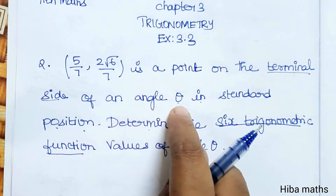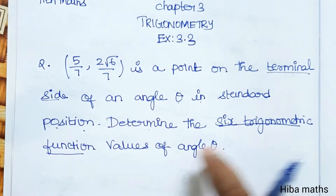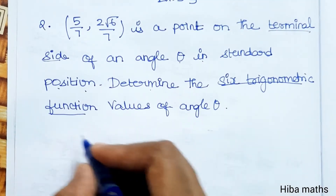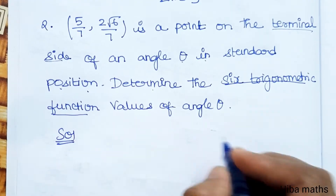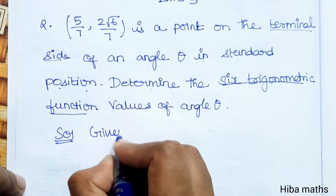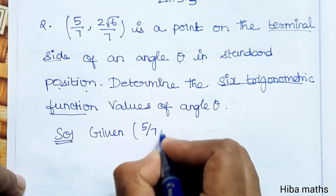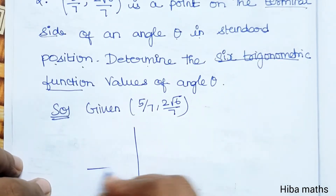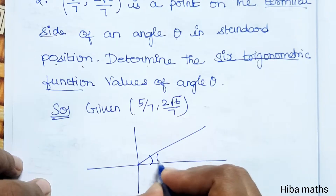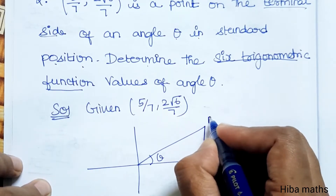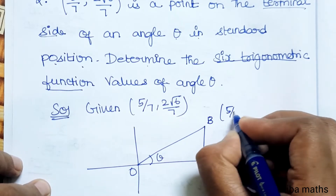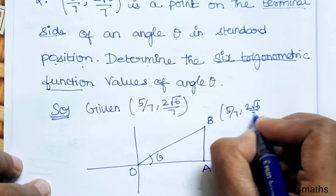We get the terminal side of angle theta and draw the diagram with the given point. The six trigonometric functions are sin, cos, tan, and their reciprocals. The given point is (5/7, 2√6/7). In the diagram, this is theta, this is the terminal side. We label the points A, B, and O. The x-coordinate OA is 5/7 and the y-coordinate AB is 2√6/7.